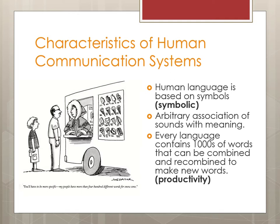Human language is symbolic. That refers to the fact that language is based on symbols and that there is an arbitrary association of sounds with meaning. They only mean something because a culture in a shared aspect agrees on those things. Another property or characteristic of human communication systems is its productivity — that words can be combined and recombined to make new words, and that happens all the time.